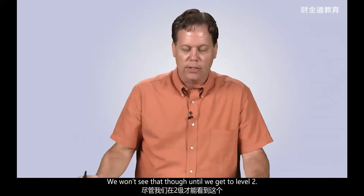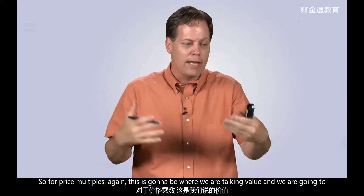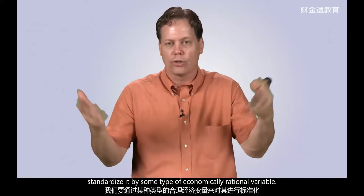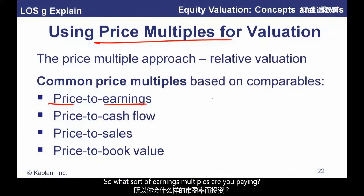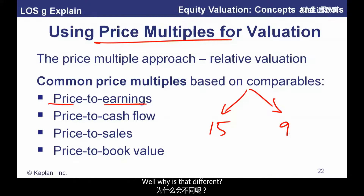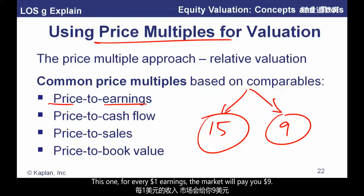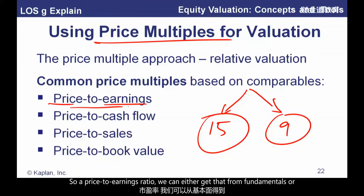Now let's talk about price multiples or relative valuation. This is where we take value and standardize it by some type of economically rational variable — price per square foot for homes, price per room for hotels, price per gallon for gasoline, and here it's price per dollar in earnings. If you look at two firms, both with earnings of $1 — one trading at 15 times earnings, the other at 9 times earnings — the biggest single reason for that difference is probably growth. The price-to-earnings ratio: we can either get it from fundamentals or go out and get comparables.